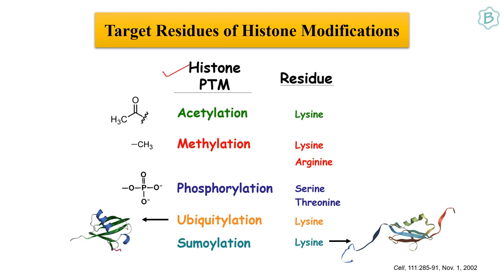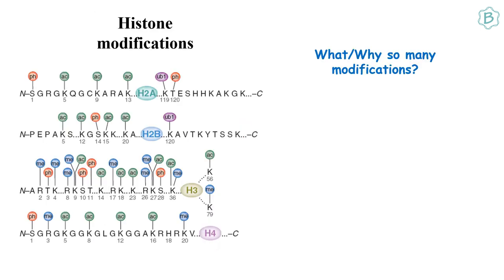Histones undergo post-translational modifications which include acetylation, methylation, phosphorylation, ubiquitylation, sumoylation, and also ADP ribosylation. There are particular residues in which these modifications occur, which we will see one by one.